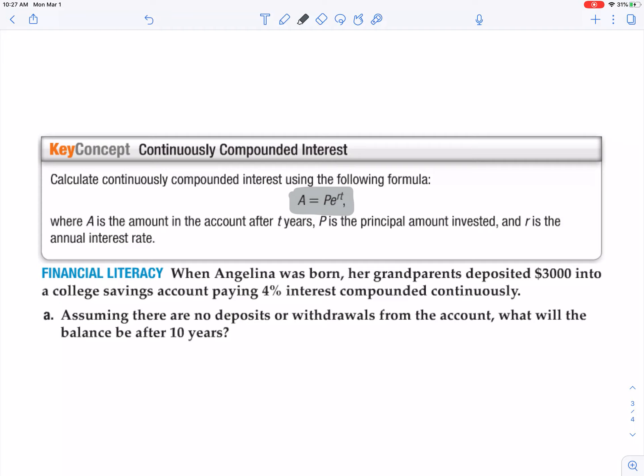Instead of using A for initial amount, they use P for the principal amount invested in the account. And then instead of using k for the rate of change, they use r for the annual interest rate. Otherwise, it's the exact same thing.